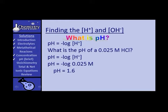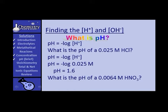What is the pH of a 0.0064 molar nitric acid? Nitric acid is a strong acid, so find the negative log of 0.0064. Put in 0.0064, take the log of that, and change the sign. The pH is 2.2.